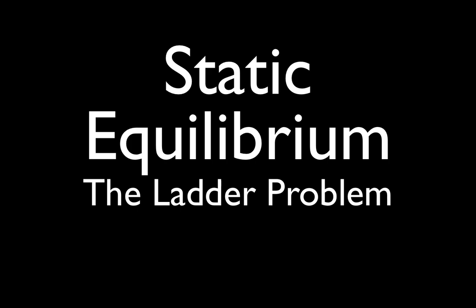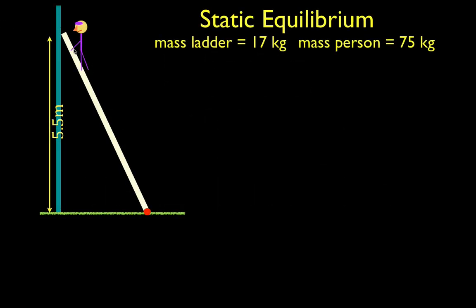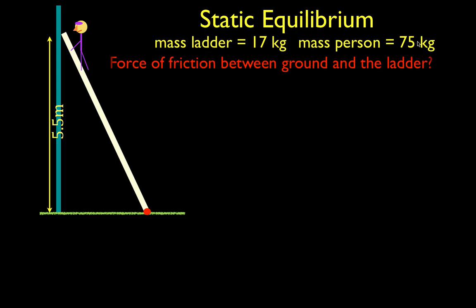In today's video we're going to go over another problem following static equilibrium — the ladder problem. We have a ladder with a person standing on it. The distance from the ground surface to the point of contact between the wall and the ladder is 5.5 meters. The mass of the ladder is 17 kilograms and the mass of the person is 75 kilograms. We would like to know what is the force of friction between the ground surface and the ladder.